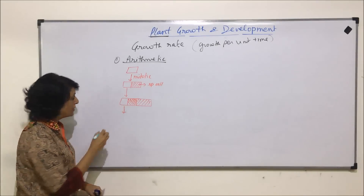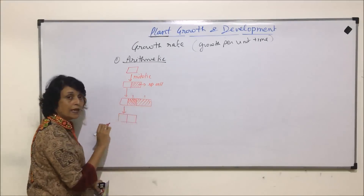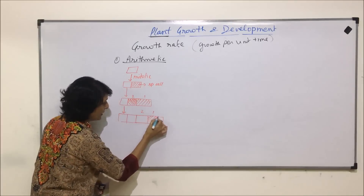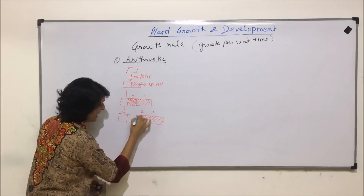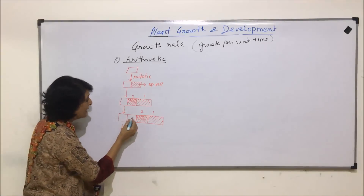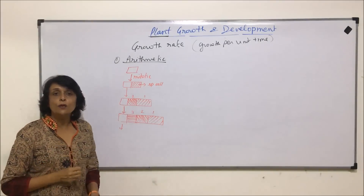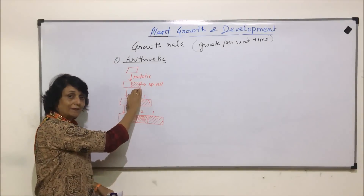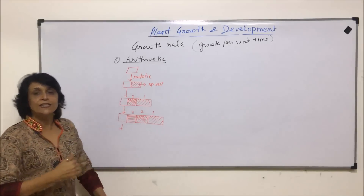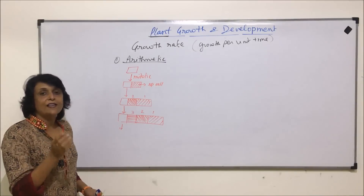This cell again undergoes mitotic division, forming two cells — cell one and cell two. Of the two cells formed, one will undergo division and the other will get specialized. So now there are three cells. How has the size of the plant increased? There was one cell, then two cells, then three cells, then four, five, six, and so on. Every time, the size increases only by the addition of one.